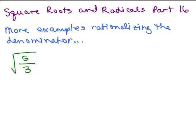This is part 16 of Square Roots and Radicals. In this video we're going to start by doing some more examples rationalizing the denominator. So far we've only done this with square roots. Let's look at this problem: square root of 5 thirds.